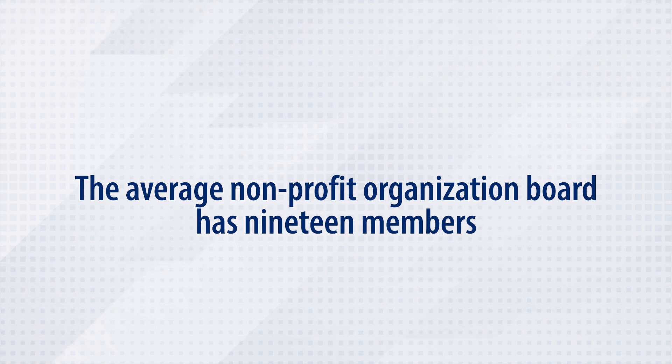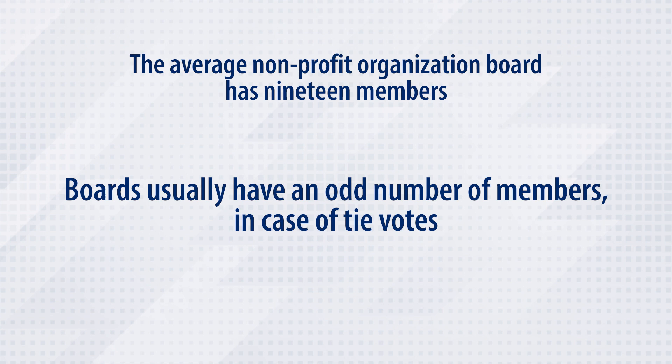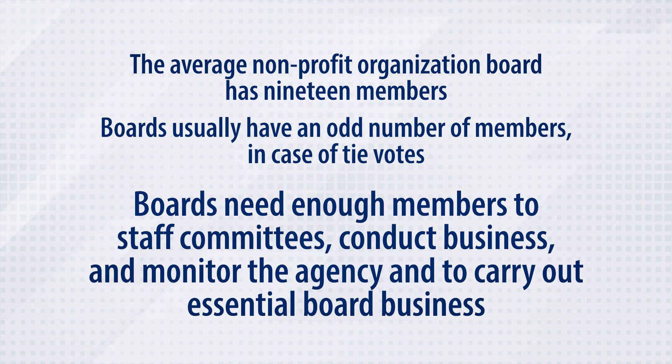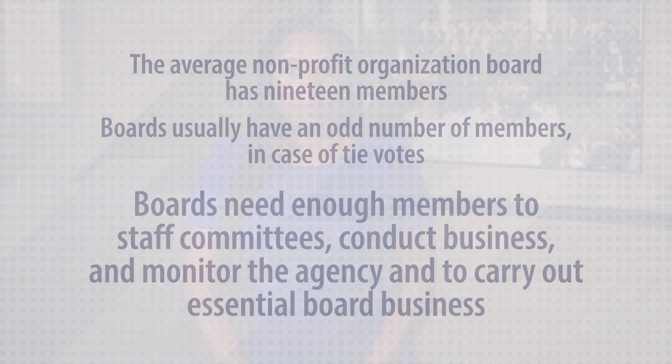Here are some key facts about board size from the nonprofit world. The average nonprofit organization board has 19 members. Boards usually have an odd number of members in case of tie votes. Boards need enough members to staff committees, conduct business, and monitor the agency and to carry out essential board business. For public boards, the structure is similar and serves as an advisory body for the CAA.